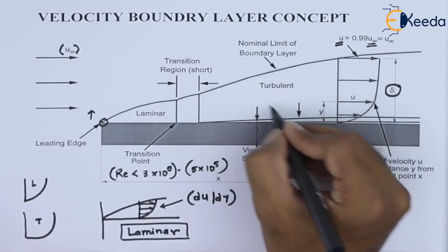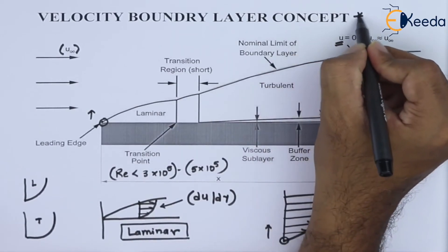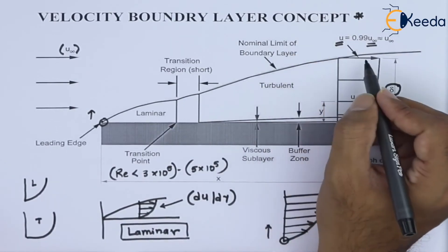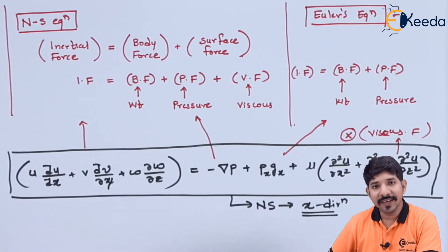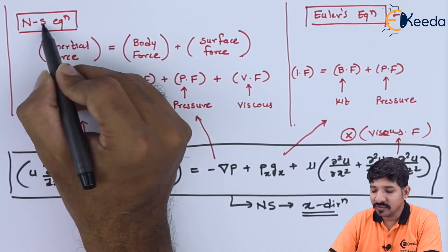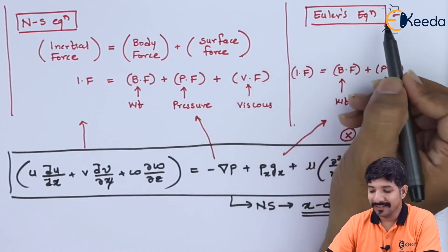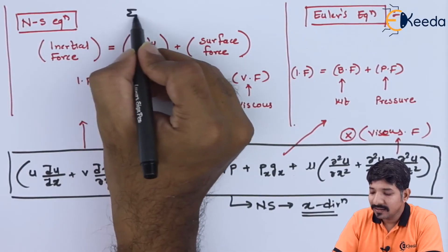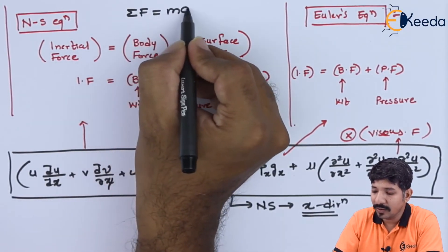Now, why does this concept exist? For that we need to understand a few fluid dynamic equations. Two very important fluid dynamic equations are the Navier-Stokes equation, called the NS equation, and the Euler's equation. These come from Newton's second law — summation of forces equals mass into acceleration.